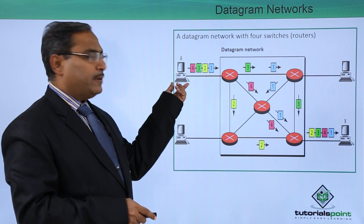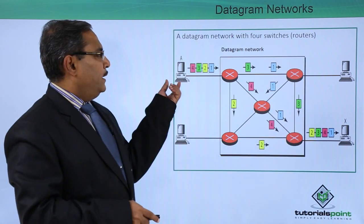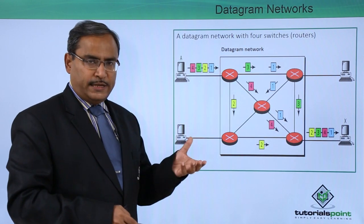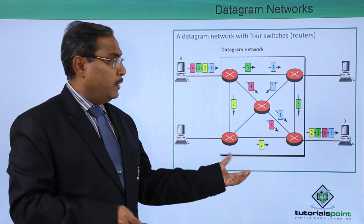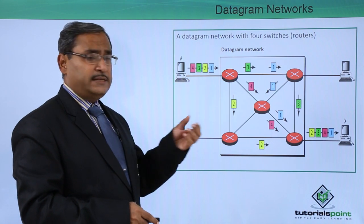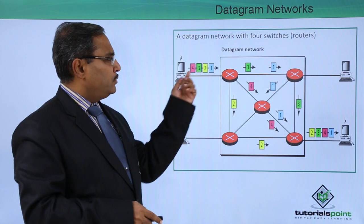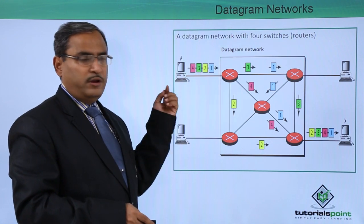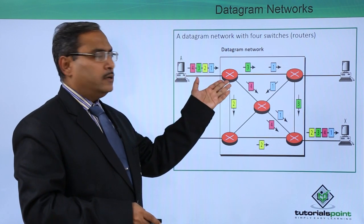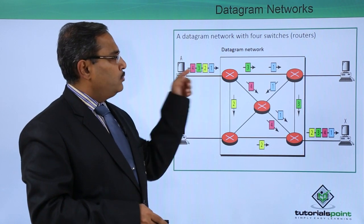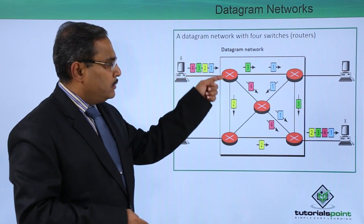Let us suppose this is our sender and this is our respective receiver. We have one long message, and depending upon the maximum packet size allowable in this particular network, the long message has been divided into four packets. The packets are numbered one, two, three, and four. At this particular router, these packets have arrived.